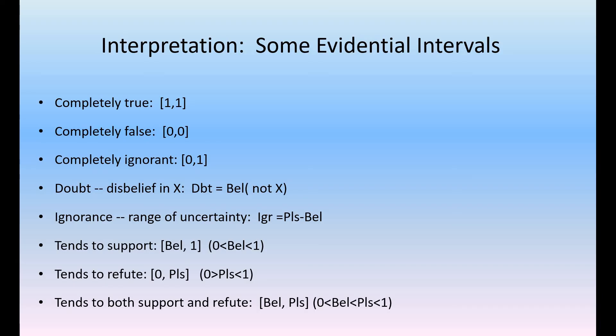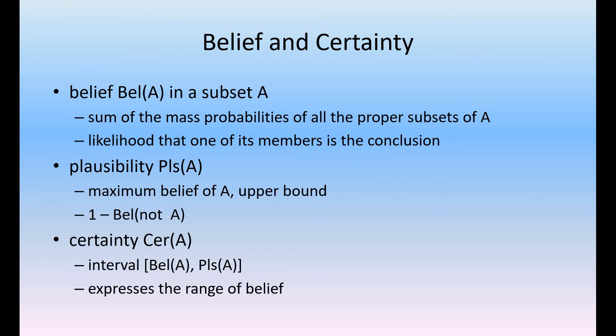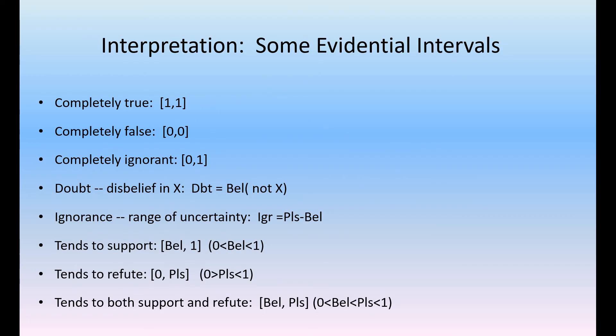These intervals, each and every interval can have some specific meaning. The belief and plausibility can give specific meaning to the certainty, so certainty can be measured using this particular belief and plausibility. Different ranges can define different kinds of definitions, different ranges can give different kinds of meanings here, interpretations.